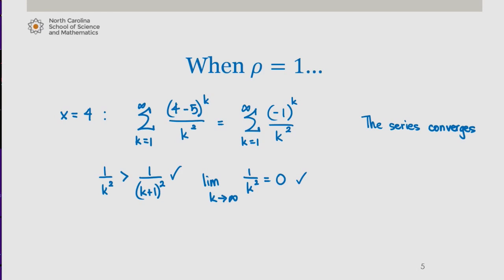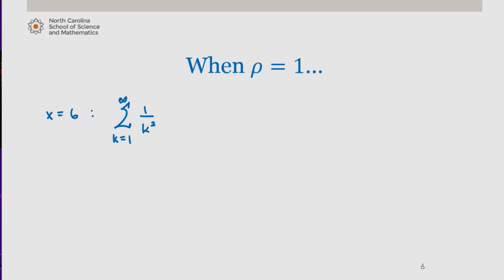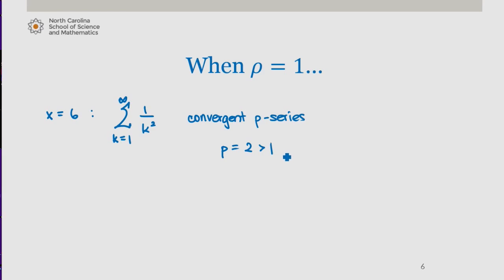So we want to include x equals 4 in our interval of convergence. When x is 6, our series is the sum from 1 to infinity of 1 over k squared. This is a convergent p-series with p equal to 2, which is greater than 1, so our series converges here as well.